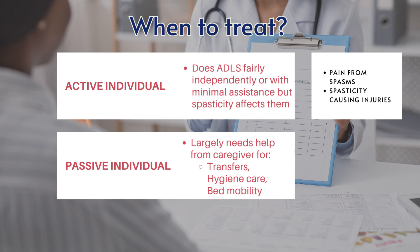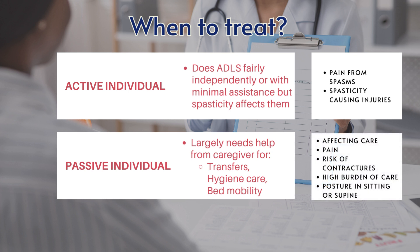For a passive individual, this type of individual after stroke will need a lot of help from caregivers for daily activities such as transfers, hygiene care, and mobility. For this group, spasticity will be affecting their care — they may have pain, a high risk of contracture development, and a high burden of care for caregivers. If spasticity is also affecting their posture in sitting or in supine, these are the reasons why you would want to treat spasticity for a largely passive individual.